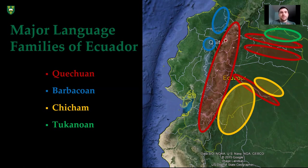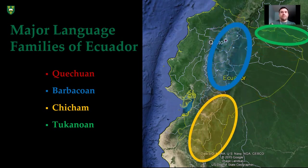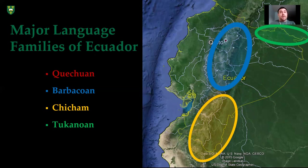You also have Barbacoan languages to the northwest, Tucanoan languages to the northeast, and Chicham languages to the southeast. Quechuan languages are actually a relative newcomer to Ecuador — they only arrived shortly before the European conquest in the 15th century, so they have only been in this area in force for just over 500 years. The conjecture is that Barbacoan languages were spread throughout the central Ecuadorian highlands, Tucanoan languages were more widespread in the Amazon basin, and Chicham languages might have actually been spoken in the southern highlands at one point.